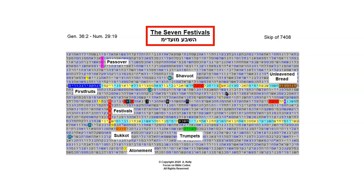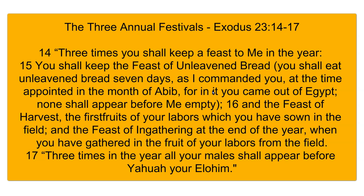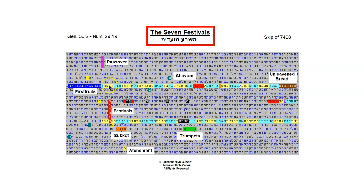This highlighted line is from Exodus chapter 23, verses 15 and 16. I'm going to read verses 14 to 17 for context. 'Three times you shall keep a feast to me in the year. You shall keep the feast of unleavened bread. You shall eat unleavened bread seven days as I commanded you at the time appointed in the month of Abib, for in it you came out of Egypt. None shall appear before me empty. And the feast of harvest, the first fruits of your labors which you have sown in the field, and the feast of ingathering at the end of the year, when you have gathered in the fruit of your labors from the field. Three times in the year all your males shall appear before Yahuwah your Elohim.' That is amazing that that verse is there, and that's where unleavened bread and the feast of first fruits are mentioned.